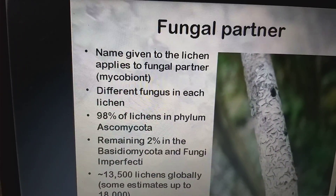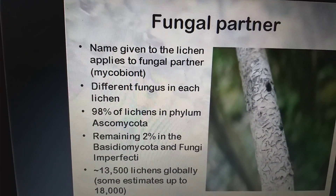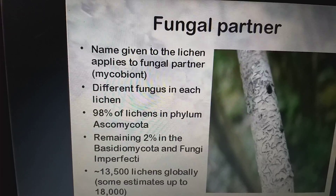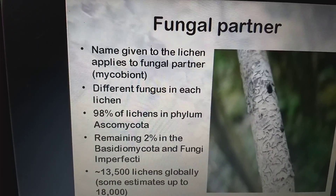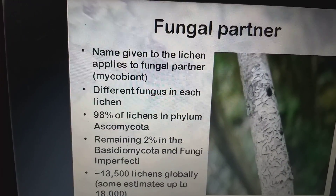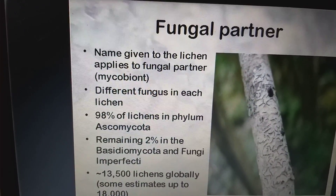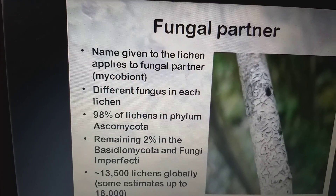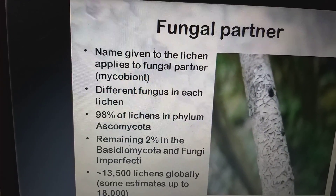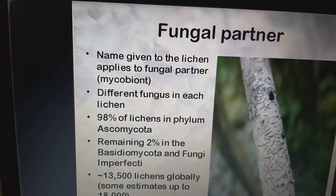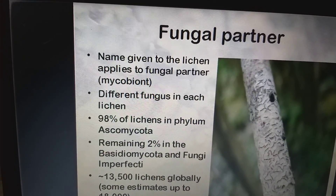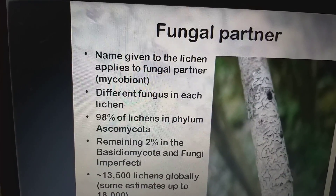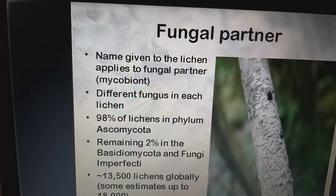The name given to a lichen applies to the fungal partner, the mycobiont. There is a different fungus in each lichen. 98% of lichens are in the phylum Ascomycota and the remaining 2% in Basidiomycota and fungi imperfecti. Around 13,500 lichens are estimated globally.